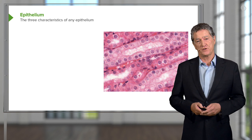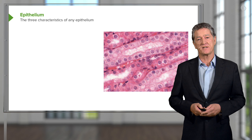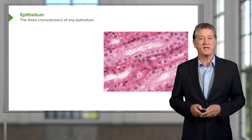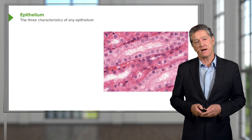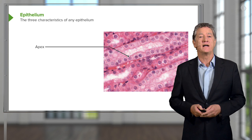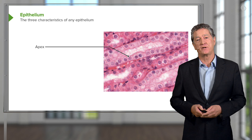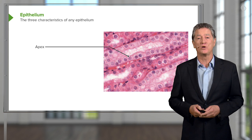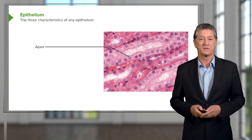It's very important, first of all, to understand what the characteristics of epithelium are. It has three major characteristics that really identify epithelia. Firstly, each of the epithelial cells has an apex, or a surface that's adjacent to the lumen, which is often a hollow tube.